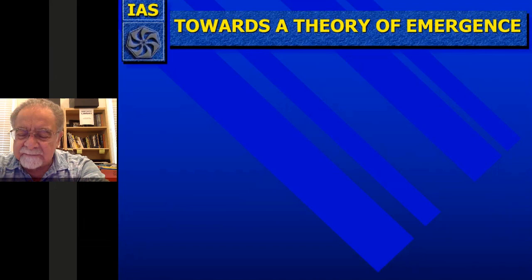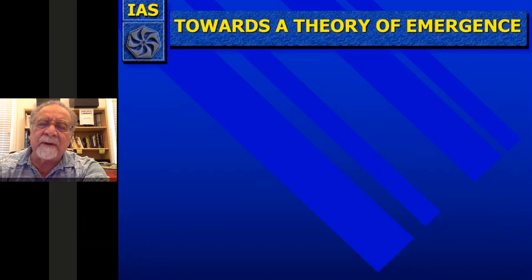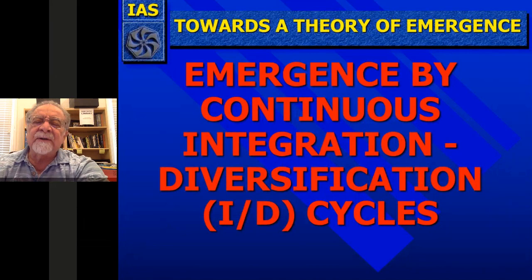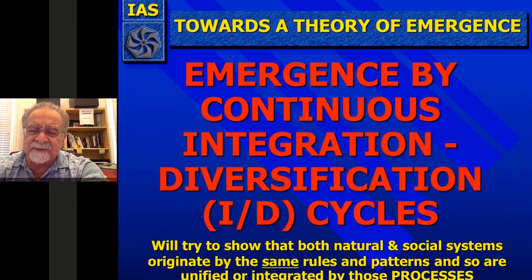There may be some repetition in here, but there's also a bunch of new slides. There will be quiz questions on it in the seventh quiz and the final also. To the rest of you, this is my theory of emergence, which derives from the continuous or unbroken sequence — I call it the integration diversification, or ID cycles, I showed you last time. We'll try to show that both natural and social systems originate by the same rules and patterns and are unified by those processes.